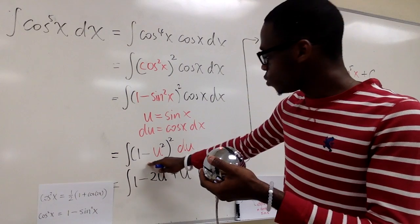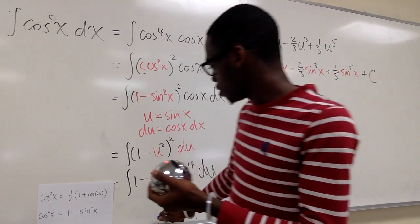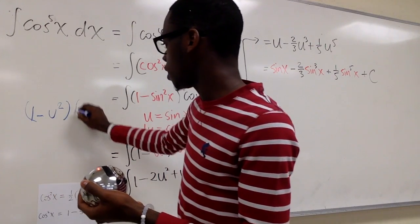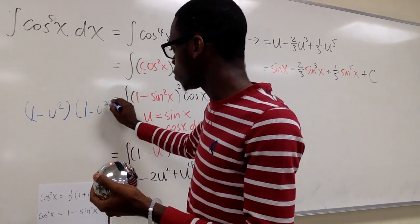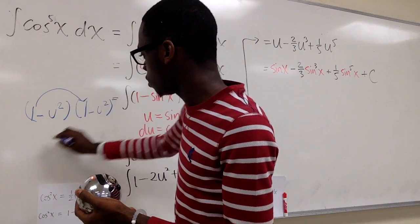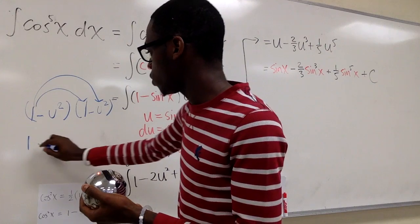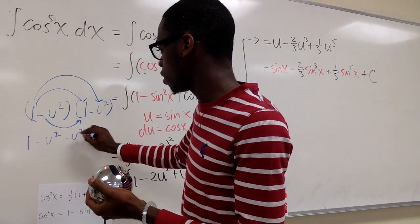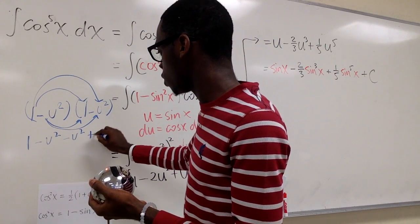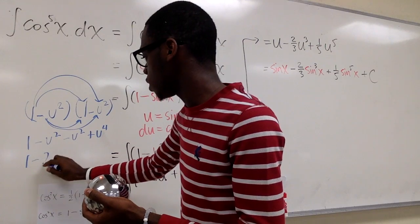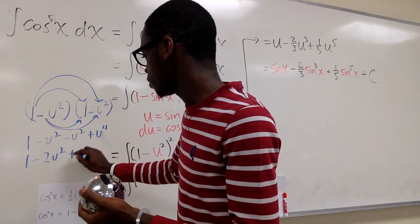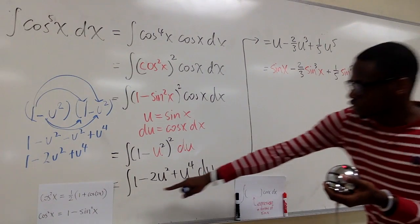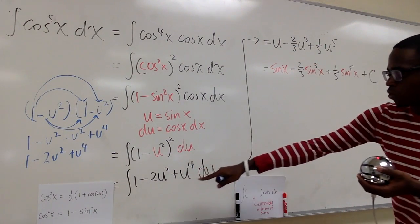To evaluate this we expand the parentheses: (1 minus u squared) times (1 minus u squared). That gives us 1 times 1 = 1, 1 times negative u squared = negative u squared, negative u squared times 1 = negative u squared, and negative u squared times negative u squared = positive u to the fourth. Combining like terms gives us 1 minus 2u squared plus u to the fourth.